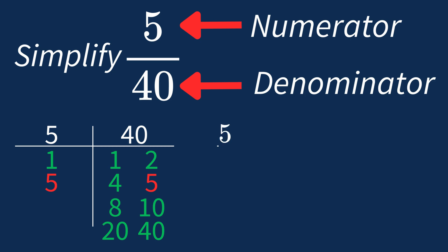Dividing the numerator 5 by 5 gives us 1. Dividing the denominator 40 by 5 gives us 8. So after dividing, the simplified fraction is 1 over 8.